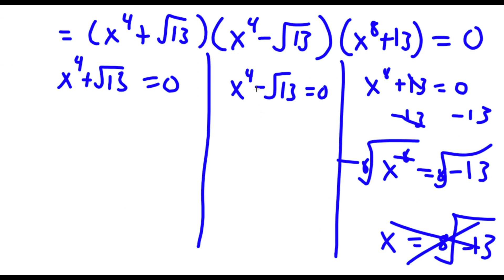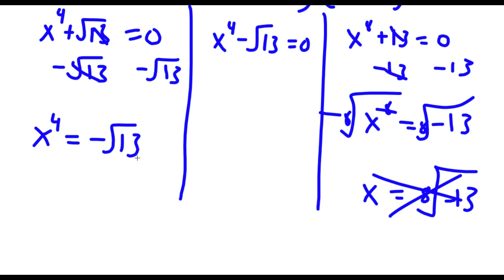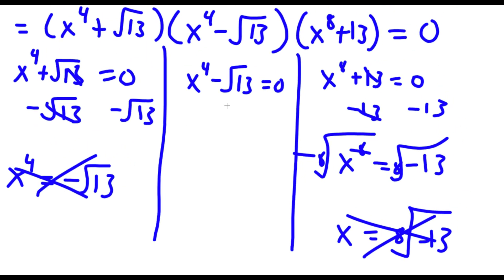For x to the power of 4 plus the square root of 13 equals 0, subtract the square root of 13 on both sides — these two cancel out and I have x to the power of 4 equals negative square root of 13. Same issue here: this is not going to work out because you can't take the 4th power of a positive number and make it negative. So this is wrong as well.